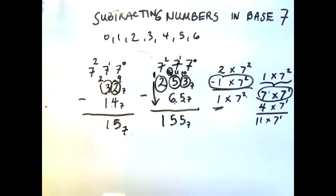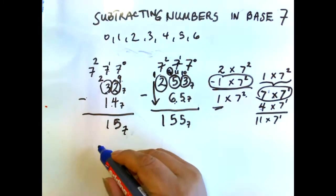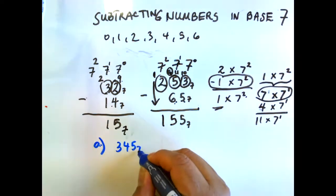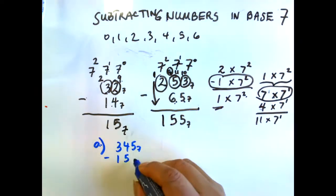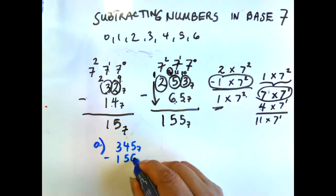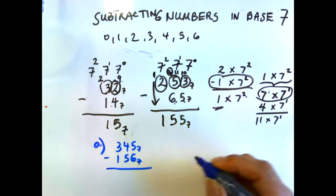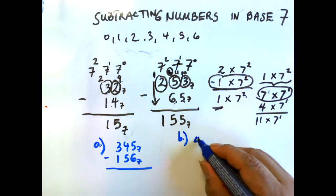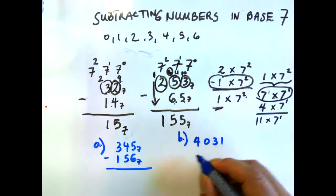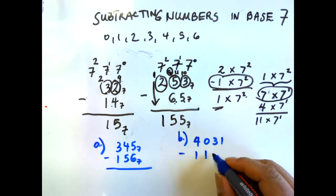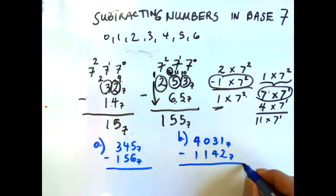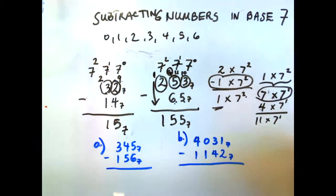I'm going to give you two homework problems. First: what is three four five in base 7 less one five three five six in base 7? The second one is four four zero three one less one one four two — this one is a little bit challenging, but it's all part of learning. Write your answers in the comment section below.